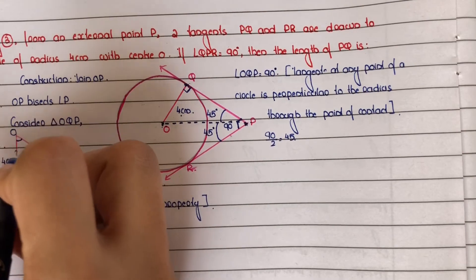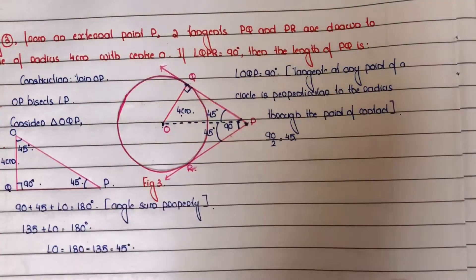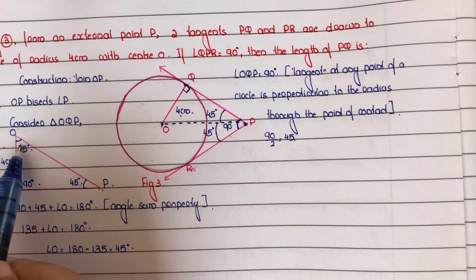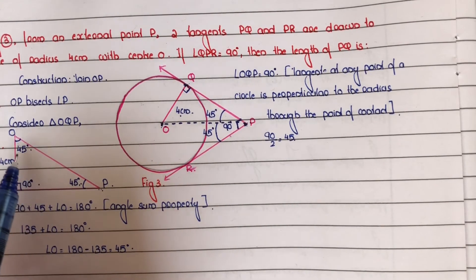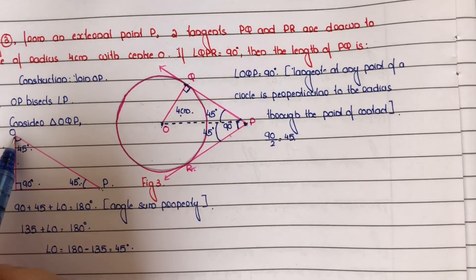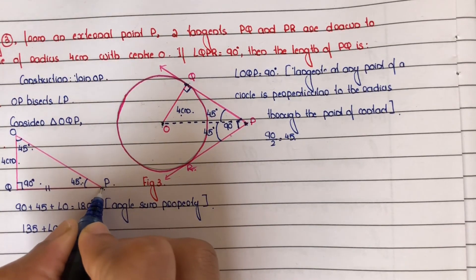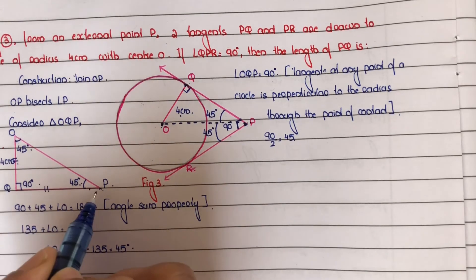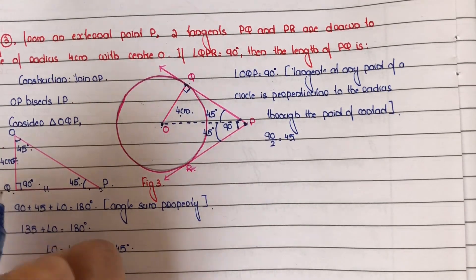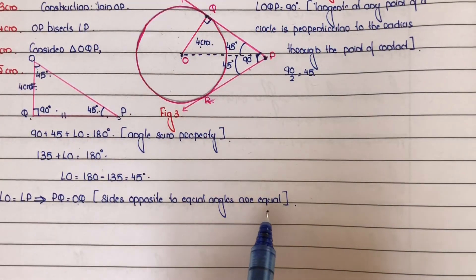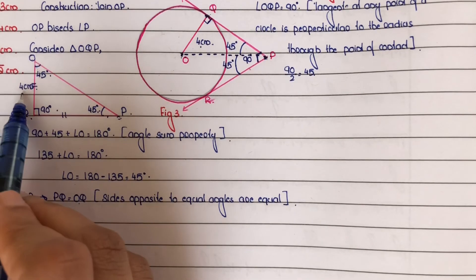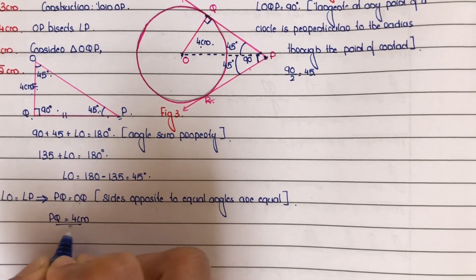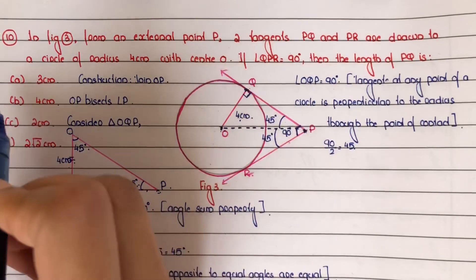In triangle OQP, angle O equals angle P, meaning these two angles are equal. We know that sides opposite to equal angles are equal. Angle O is opposite side PQ, and angle P is opposite side OQ. So angle O equals angle P implies PQ equals OQ. Since OQ is the radius equal to 4 cm, PQ equals 4 cm. The answer is option B: 4 cm.